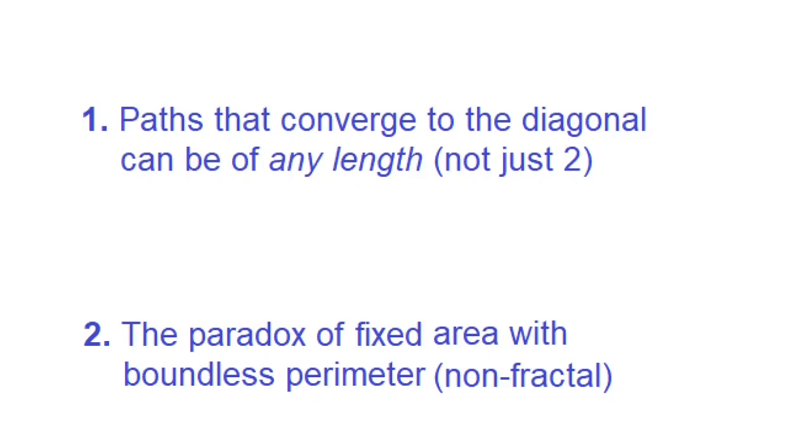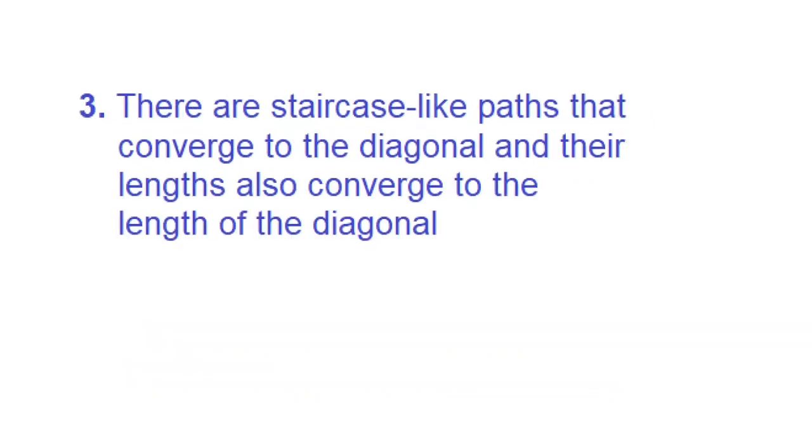Next, we see that this leads to the paradoxical situation where a triangle of fixed area can have non-fractal perimeter of arbitrary length. And finally, we also see that there are staircase-like paths that do what is expected, namely as they converge to the diagonal, their lengths also converge to the length of the diagonal, namely square root of 2.